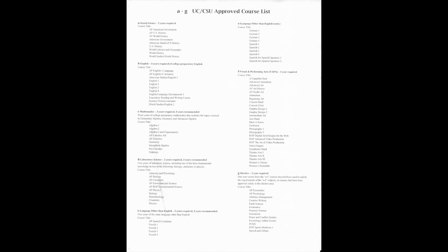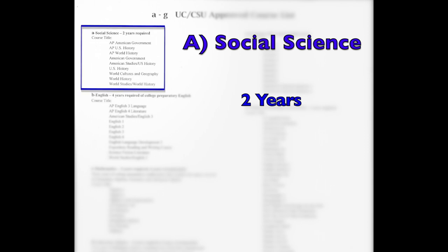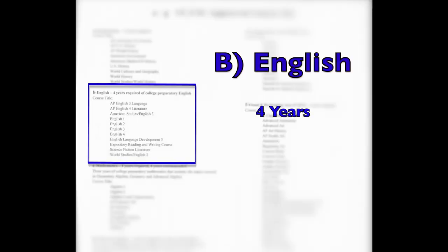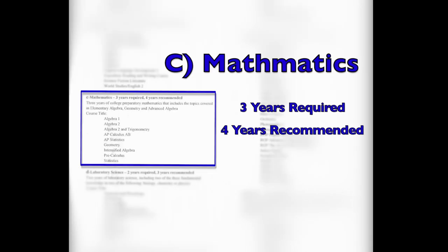What you're going to need is: in the A section is social science, total number two years. B, English for four years. C, mathematics, three years are required, four years are recommended.